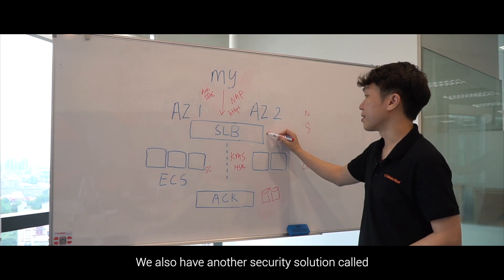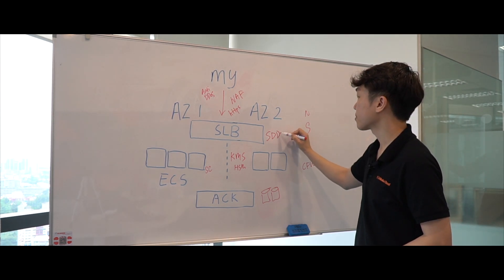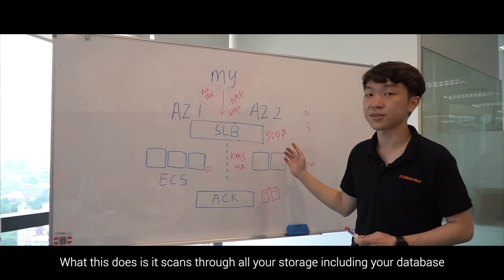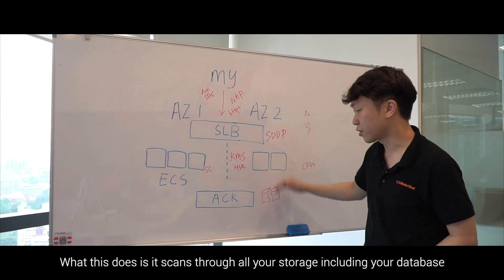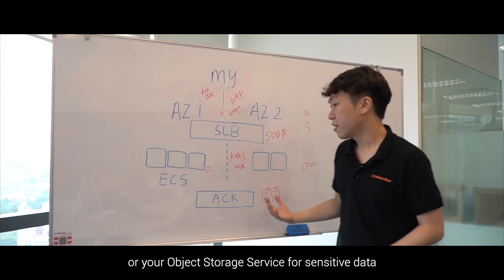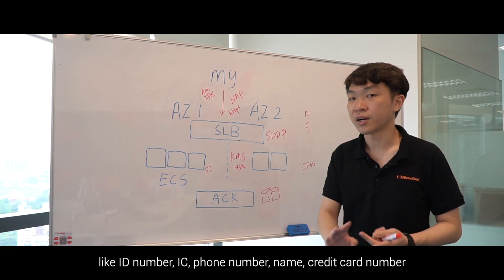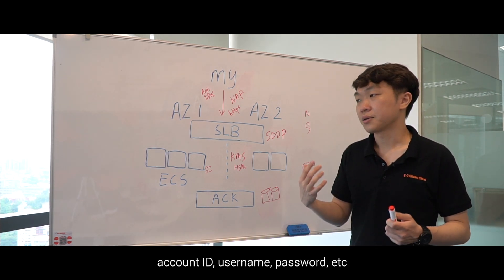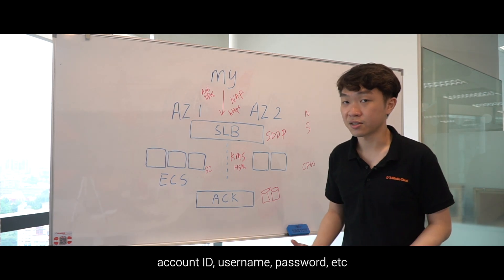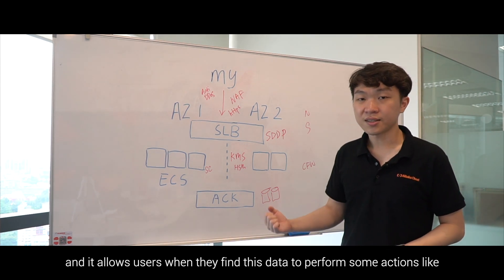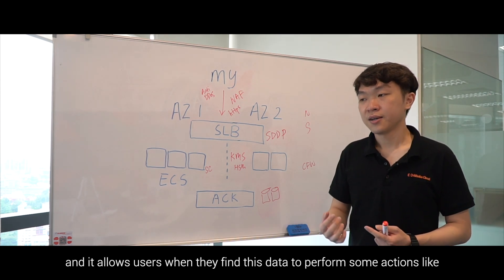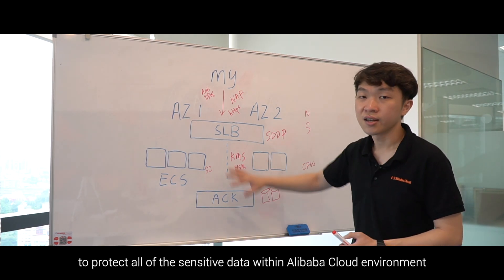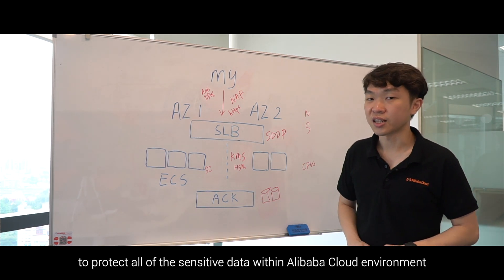We also have a security solution called SDDP, or Sensitive Data Discovery and Protection. It scans through all storage including databases and Object Storage Service for sensitive data like ID numbers, IC, phone numbers, names, credit card numbers, account IDs, and usernames and passwords. It allows users to perform actions like data masking, trimming, or further encryption to protect all sensitive data within Alibaba Cloud.